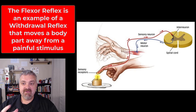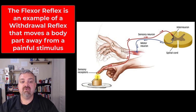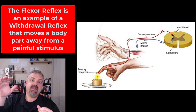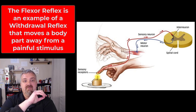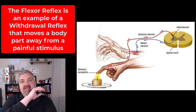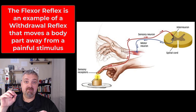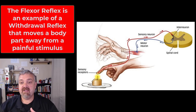Then we see the withdrawal reflex — a flexor reflex is an example of a withdrawal reflex. You have a painful stimulus and the body uses the muscle flexors to withdraw away from it. You'd also see reciprocal inhibition there, because if you touch a flame and rapidly pull your hand away, that's also rapidly stretching your triceps. If that stretch reflex then kicked in and your triceps contracted, it would put your hand back in the fire — which you wouldn't want. That's why reciprocal inhibition is so important: as agonist muscles contract, those antagonists are inhibited.